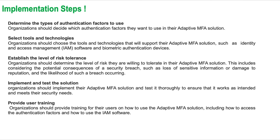The second step is to select the right tools and technologies. Organizations should choose tools such as identity and access management software and biometric authentication devices to support their adaptive MFA solution. They should also consider how these tools and technologies will integrate with their existing systems and infrastructure — this is very important.